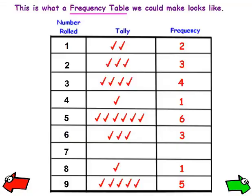This is what a frequency table we could make would look like. Here you have the number that was rolled, and this is how many people rolled that number. These are called tally marks — they could be sticks, they could be check marks, anything you want. The frequency — you just add up the tally marks — tells you how often someone rolled a 1, or how often someone rolled a 2.